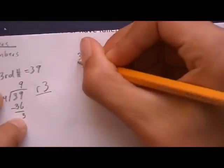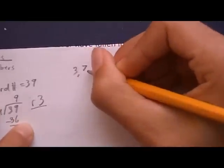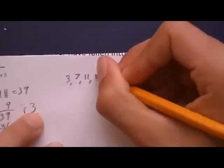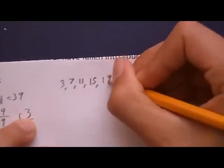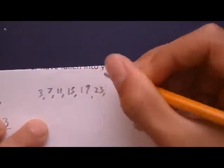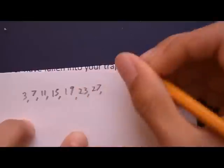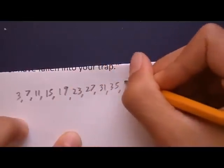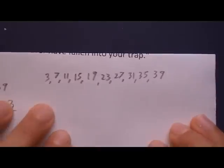So you have 3, 7, 11, 15, 19, 23, 27, 31, 35, and 39. So you should end up with 10 numbers.